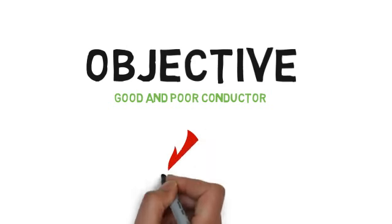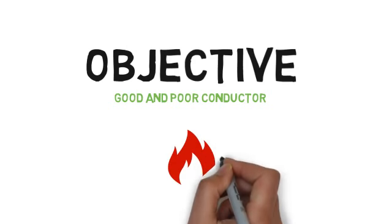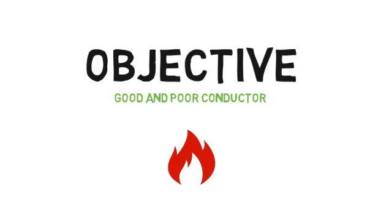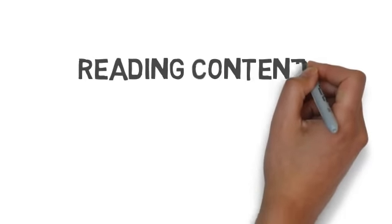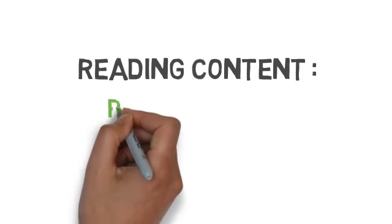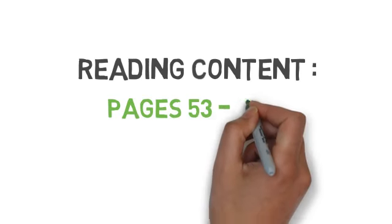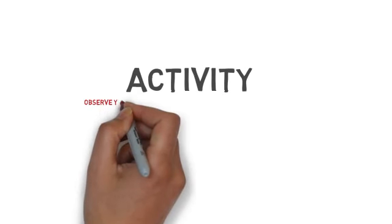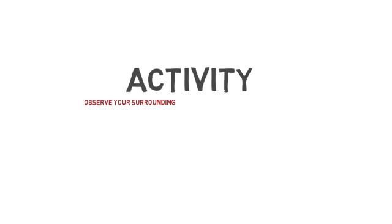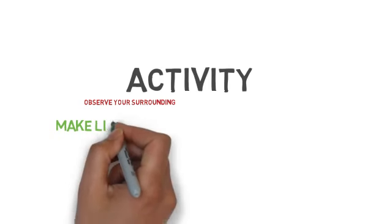First, you will write these words on a loose sheet and then find their meanings from the dictionary with the help of your parents. Your next task is reading the content carefully — you will read textbook pages 53 through 56.